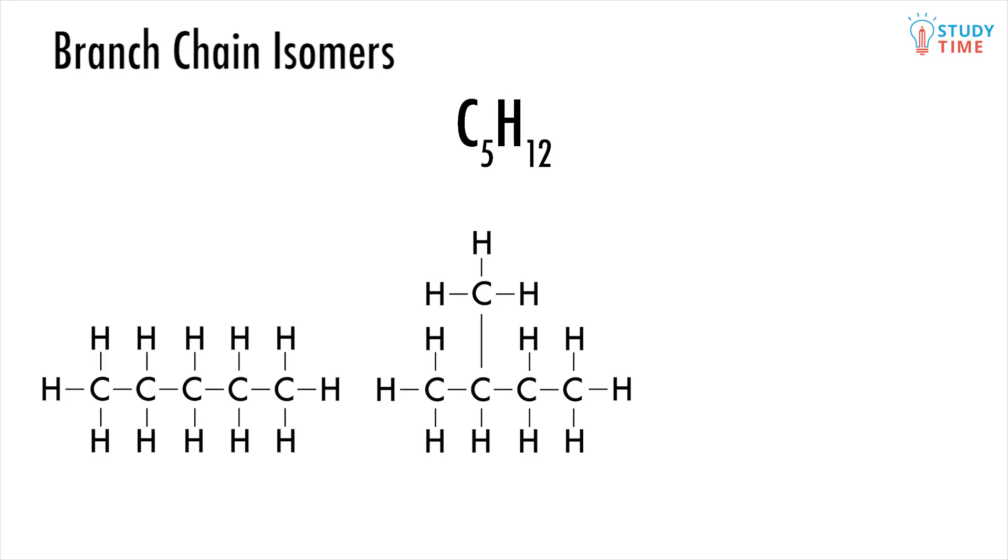The final isomer, and trickiest to find, has 2 methyl groups attached to a carbon in the primary chain. 2,2-dimethylpropane. So there you go. All the isomers of C5H12, which are all branched-chain isomers.